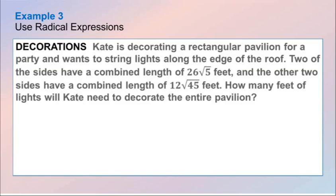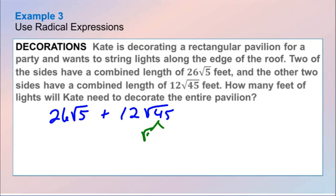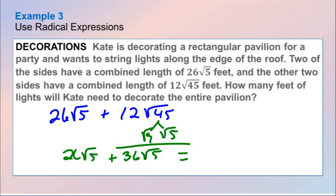Example 3 — Decorations. In word problem format, Kate is decorating a rectangular pavilion. We're taking 26 square root of 5 and adding 12 square root of 45. I cannot break down the 26 square root of 5, but I can break down the 45: that's the square root of 9 times the square root of 5, which gives us 3 times 12, which is 36 square root of 5. Adding 26 square root of 5 gives us an answer of 62 square root of 5 feet.